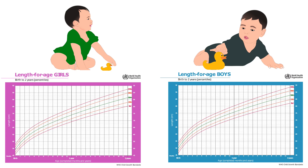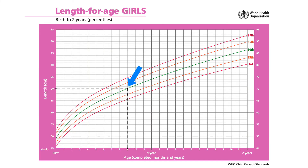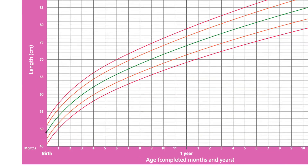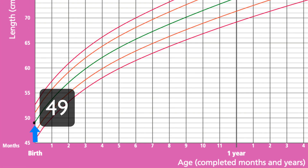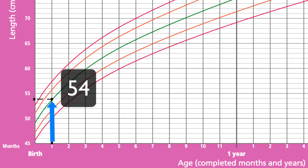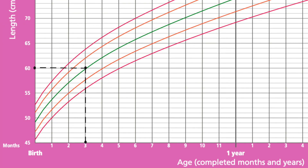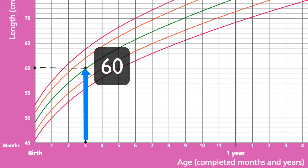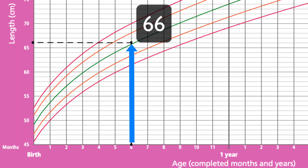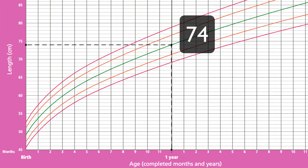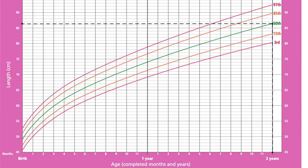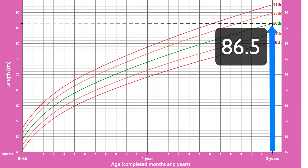Let's discuss the average length of a child from birth to two years of age along the fiftieth percentile line. For girls: the average birth length is forty-nine centimeters; at one month it is fifty-four centimeters; at three months it is sixty centimeters; at six months it is sixty-six centimeters; at one year it is seventy-four centimeters; and at two years the average length of a girl is eighty-six point five centimeters.